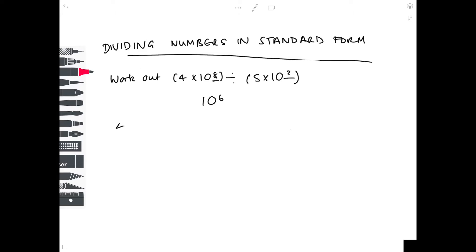And then we do 4 divided by 5. So I'm going to insert a decimal place. 5s into 40 go 8, so it becomes 0.8. However, we've got an issue. 0.8 is not a standard form number because it doesn't lie between 1 and less than 10.